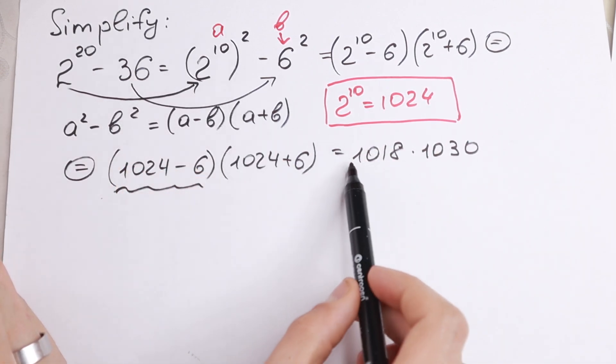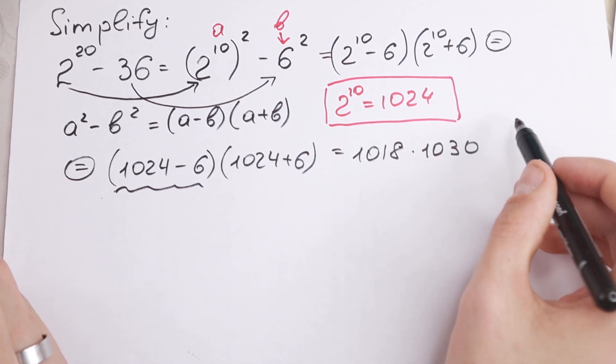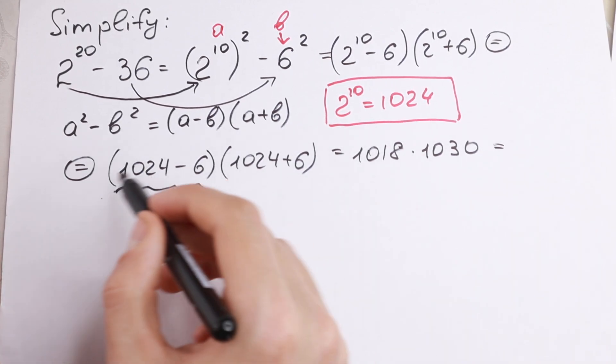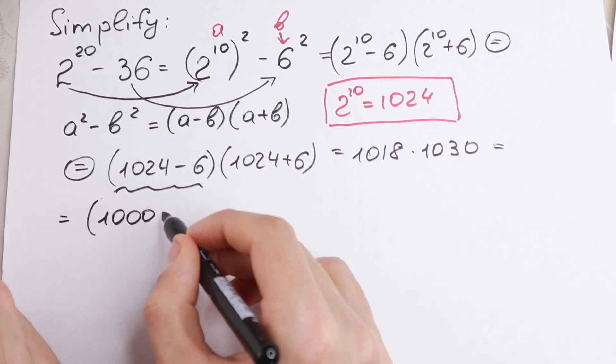So as you can see, this question goes to this product. How can we find this product? Take a look. The best way to solve it, we can express this 1018 as 1000 plus 18.